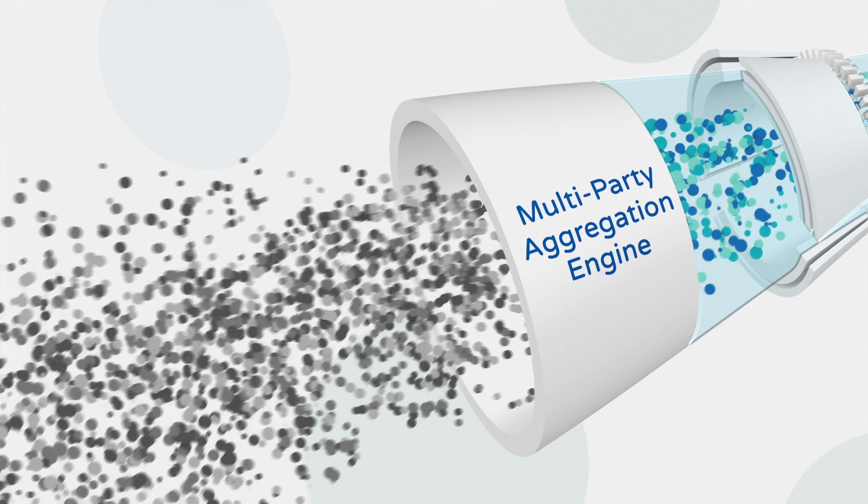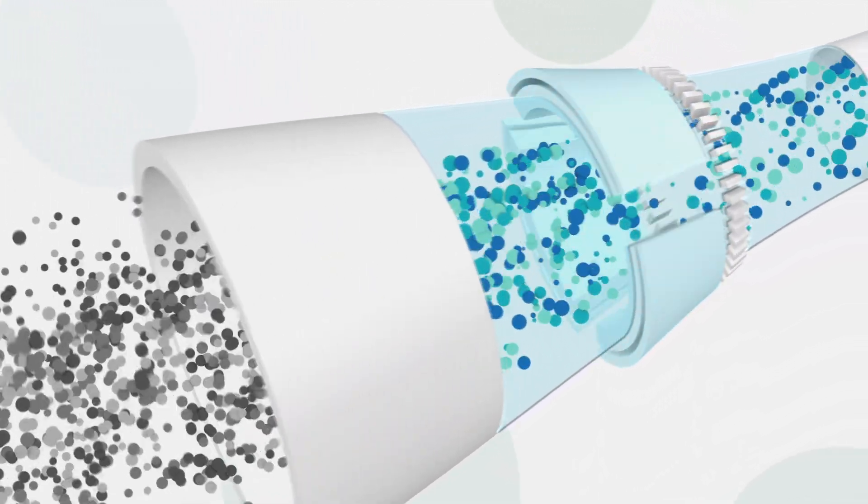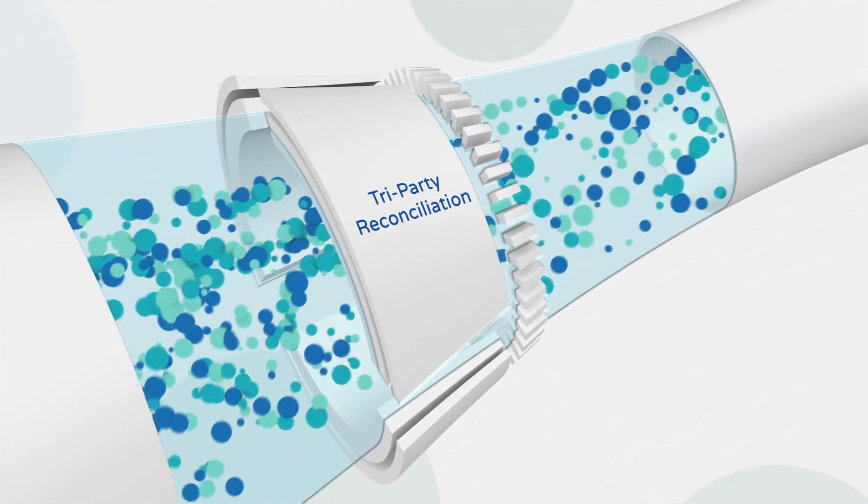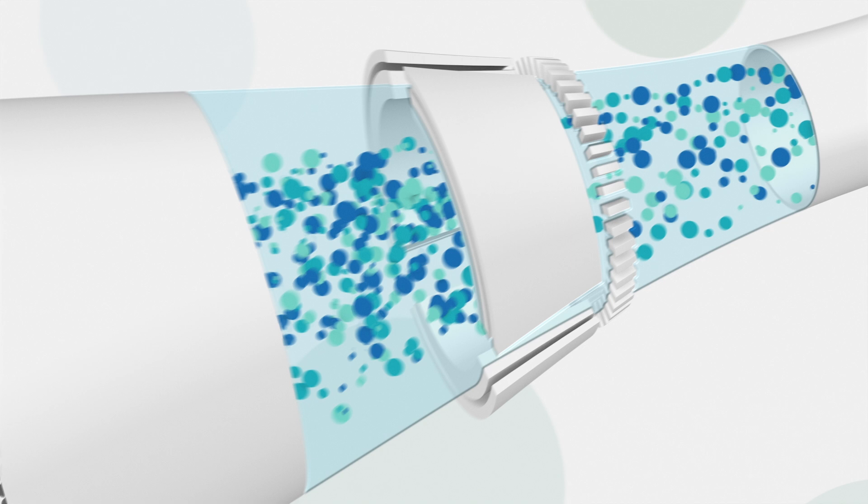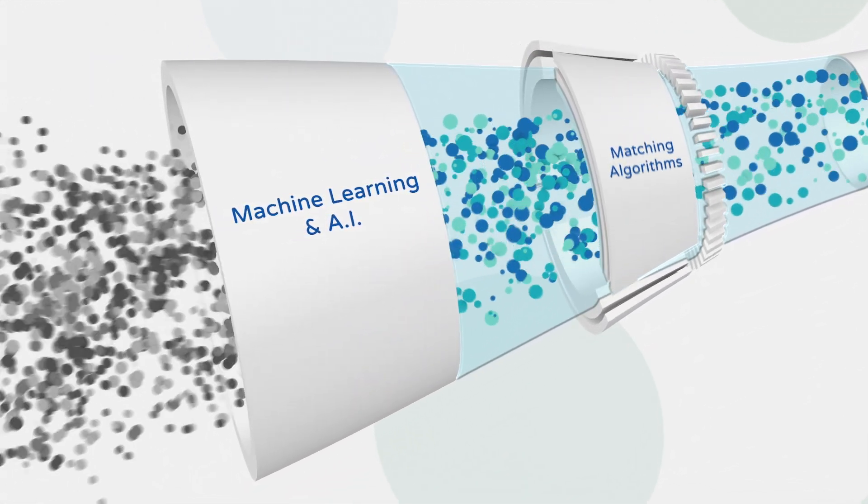All of this data comes in, gets normalized and aggregated, and then we use a proprietary tri-party reconciliation tool to reconcile all of these different data sources. For that, we use machine learning and matching algorithms to increase the level of automation.